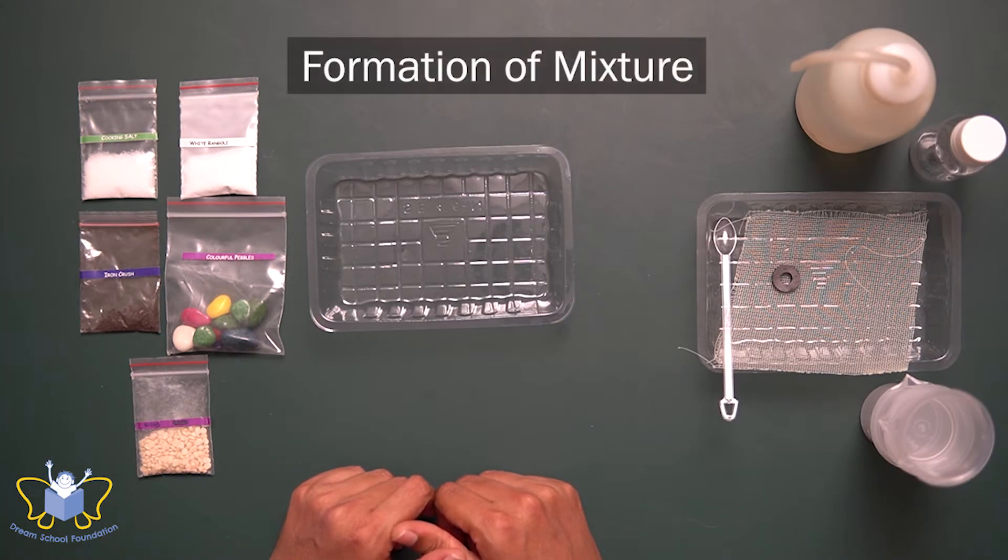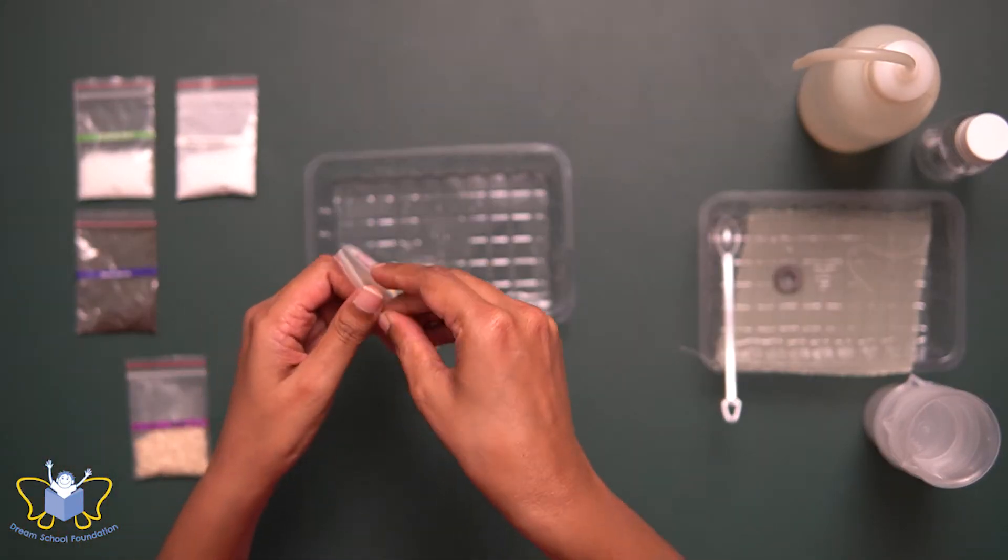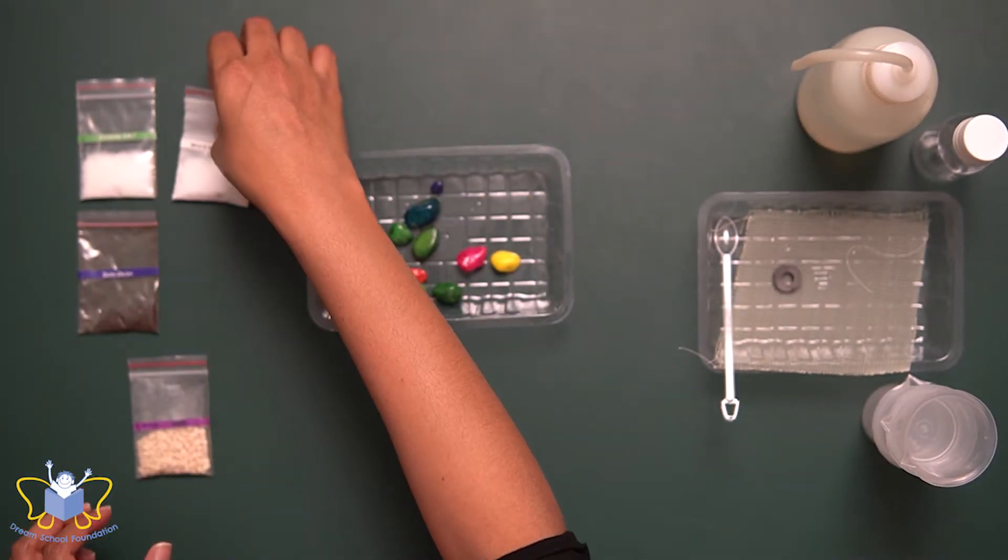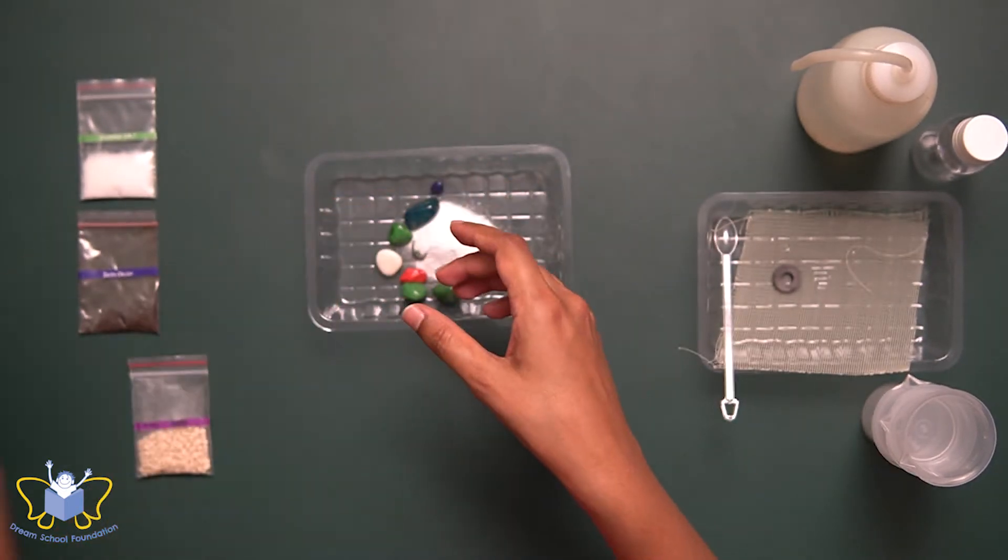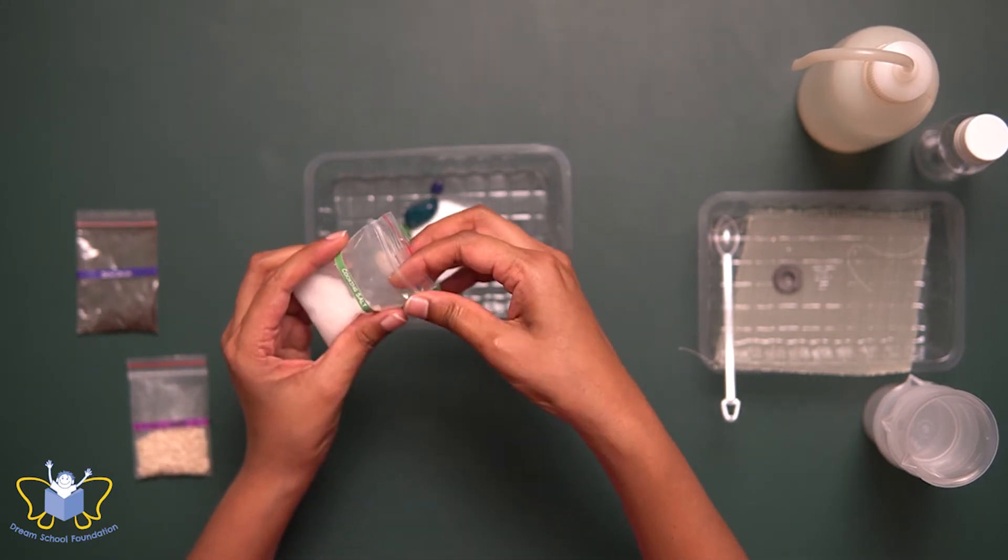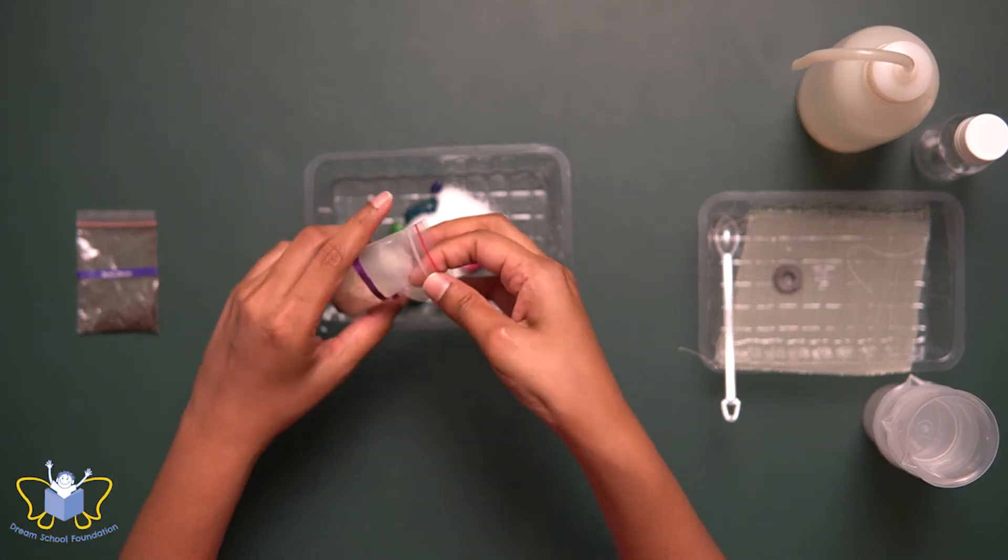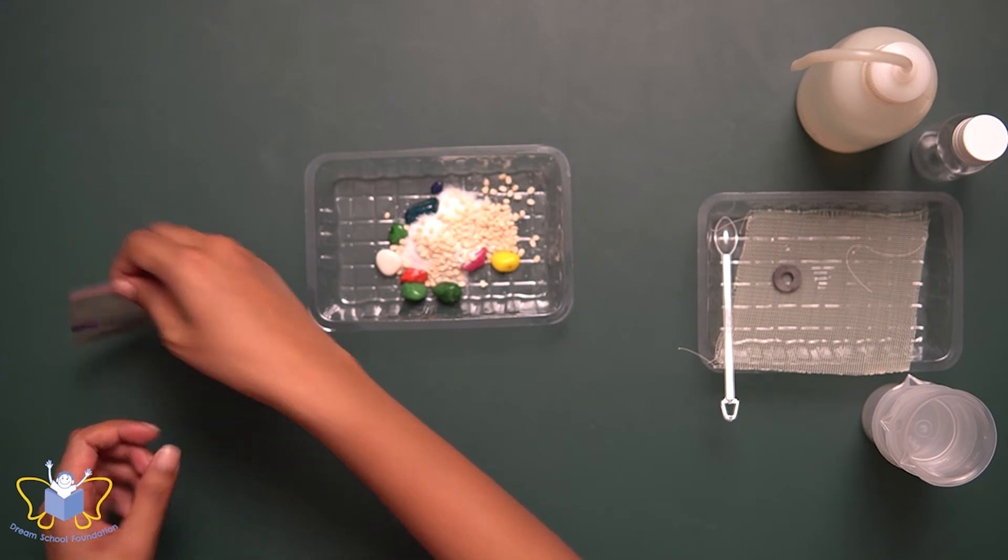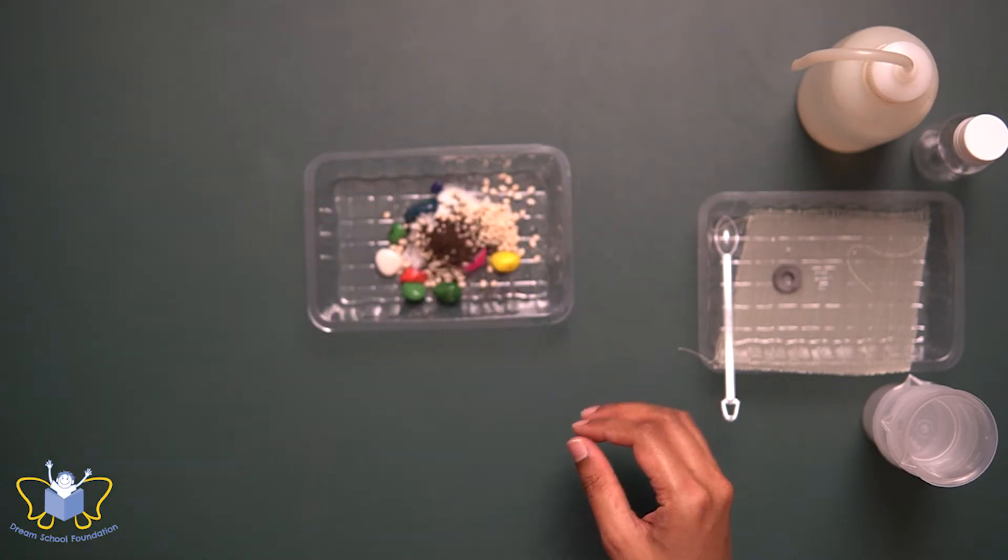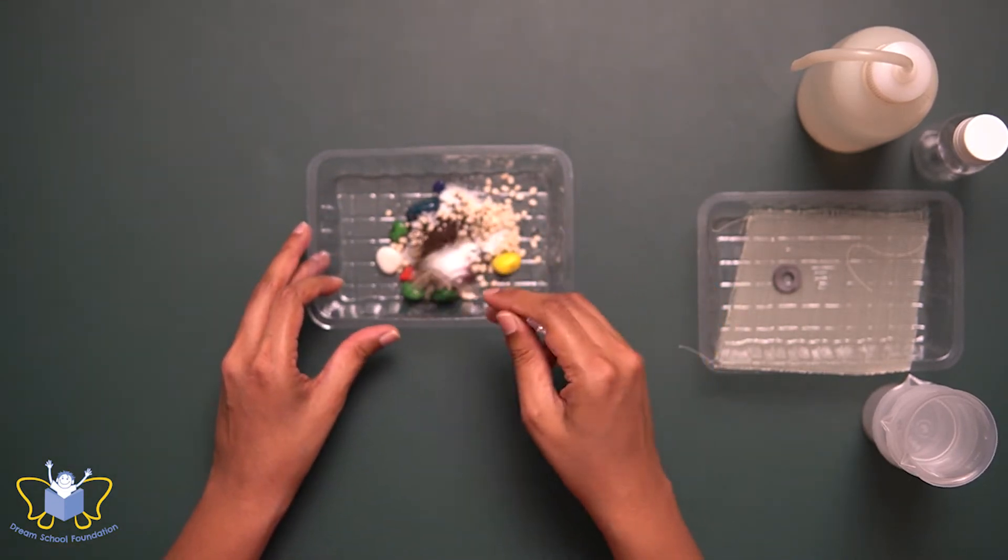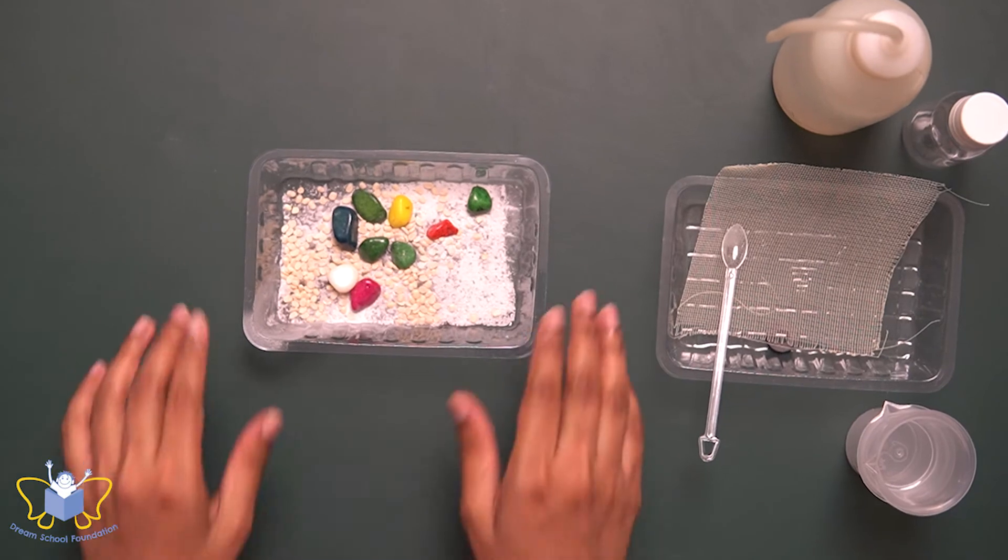Now let us make a mixture using these materials. Let me start off with the colorful pebbles. Next, I'm going to add rangoli powder. Next, we have the cooking salt. Then let me add the urad dal. Next comes the iron crush. Let me mix it with a plastic spoon.